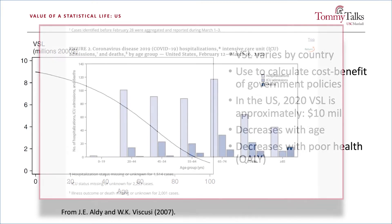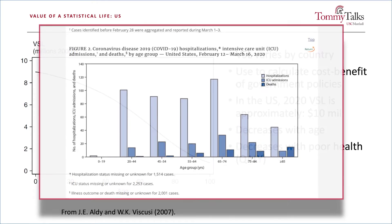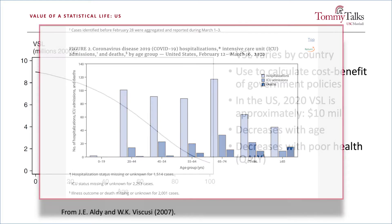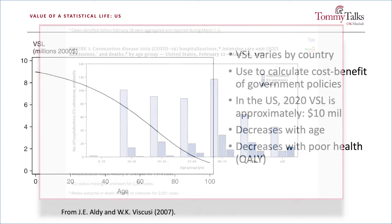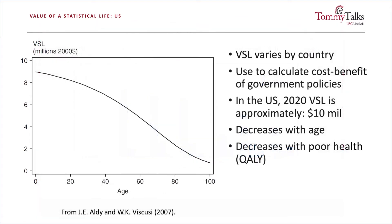This variation by age is important because the death rate for COVID-19 increases significantly with age. VSL by age can then be combined with either the current statistics about coronavirus or projections about the future spread of the disease to determine the value of lives lost in economic terms.